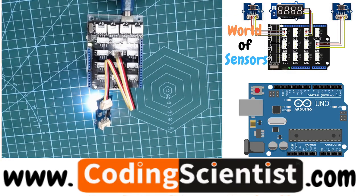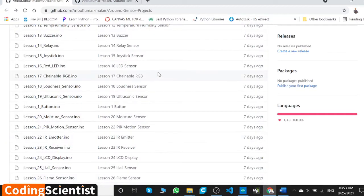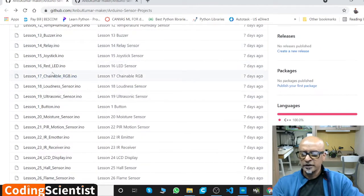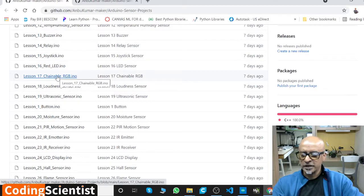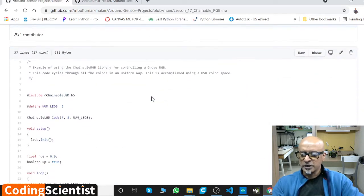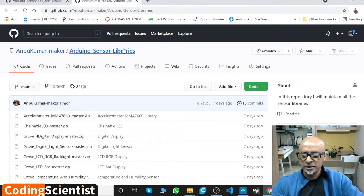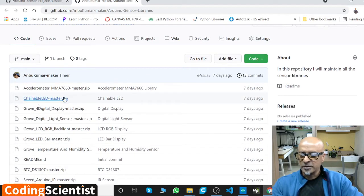Let's look at the code. Go to my GitHub, Arduino sensor projects, lesson number 17 chainable RGB. There is a library called chainable LED dot h to make your life easier. I have already placed the libraries here. You can go to my GitHub Arduino sensor libraries section, find chainable LED master dot zip. This is the file you need to download to your desktop.